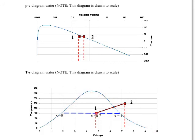0.7 is marked by state 1. X equals 0 is the left hand of the saturation curve. X equals 1 is the right hand,